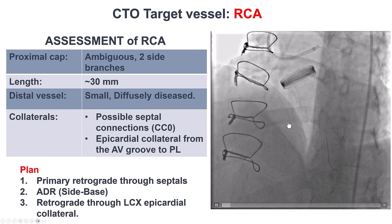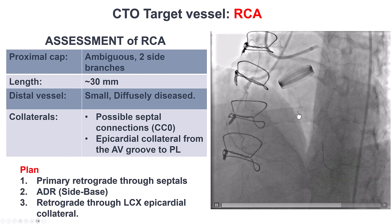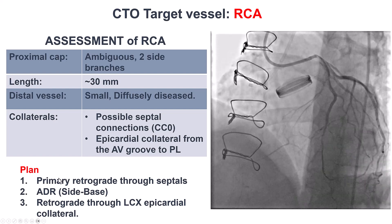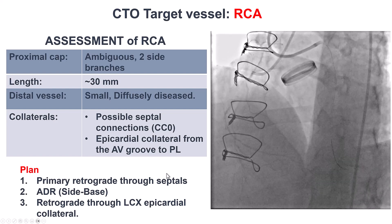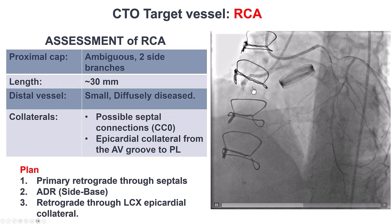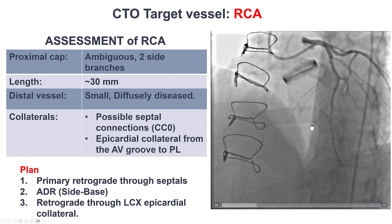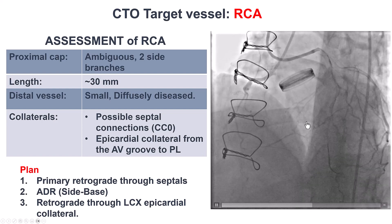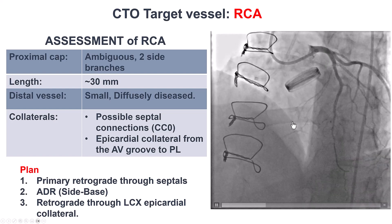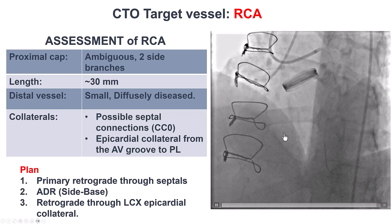The septals were not continuous, but nevertheless, we know that even non-continuous septals often do connect between the LAD and the right coronary artery. So in this particular case, our plan was to start with a retrograde approach through the septals. If it doesn't work, perform antegrade dissection reentry using the side-branch technique to enter into the extraplaque space in the CTO. And if that didn't work, then possibly attempt retrograde through a small tortuous epicardial collateral from the circumflex — that was really a last resort.